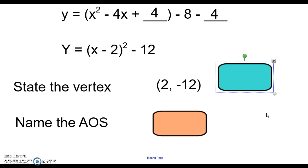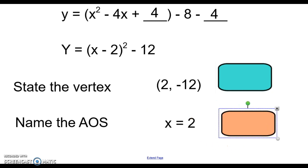And can you name the axis of symmetry? Remember, axis of symmetry is a vertical line. And that is an equation, you have to have an equal sign. So it's x = 2. You don't just write 2.